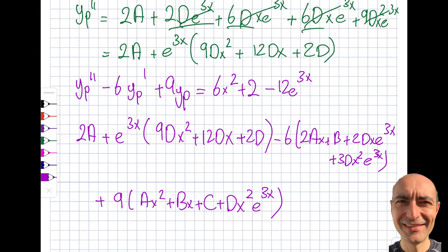There will be cancellations — otherwise I've made a mistake. I can use superposition here: I'll treat the e^(3x) part separately and equate it to minus 12, and treat the polynomial part (ax² + bx + c) separately and equate to 6x². If you didn't quite understand why I do this, visit the earlier videos — it should be video 3.2, where I explain the superposition principle.